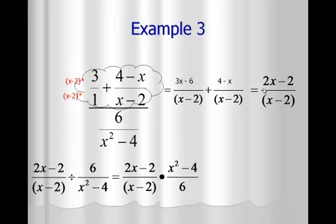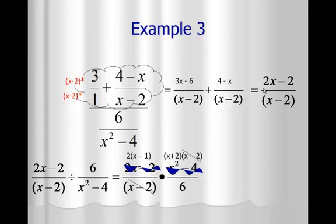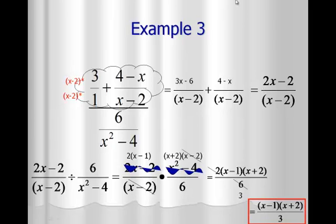There are two places to factor. On the top left, 2x minus 2 has a greatest common factor of 2, leaving x minus 1. On the top right, x squared minus 4 factors into x plus 2 and x minus 2 using the difference of squares method. Now looking for cancellations: x minus 2 in the top right and bottom left cancel. This leaves 2 times (x minus 1) times (x plus 2) on top and 6 on the bottom. The 2 and 6 are not married to anything, so they reduce — 2 cancels and 6 reduces to 3. The final answer is (x minus 1)(x plus 2) over 3.